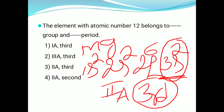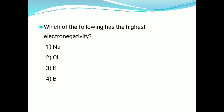So, magnesium element with atomic number 12 is in the second-A group and the third period in the periodic table. So, the third option is the right answer. Next one: which of the following has the highest electronegativity? Here we have four elements.